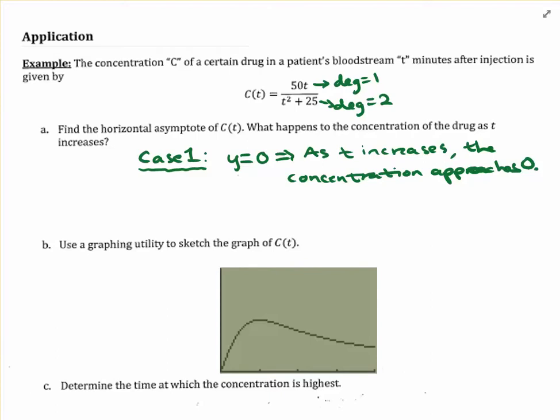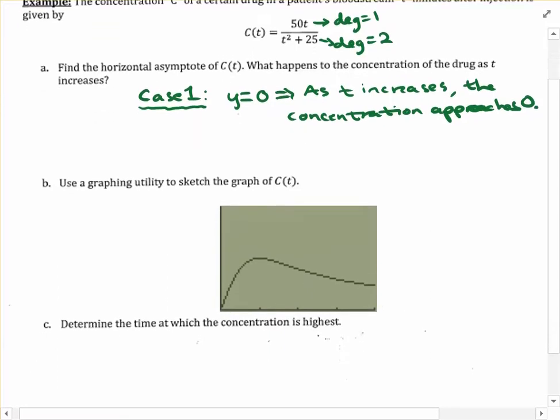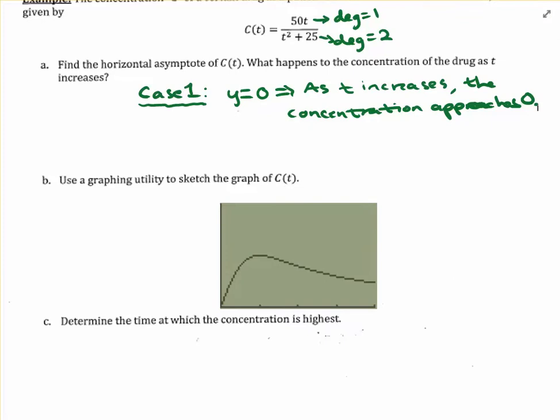And this actually takes us to part B now, where it says, use a graphing utility to sketch the graph of C(t). So it's kind of hard for me to pull up my graphing calculator in the middle of a video. It actually won't work that way, so my way around it is to just have the graph already here and just explain where this is coming from. Let me tell you what I did to get this graph.